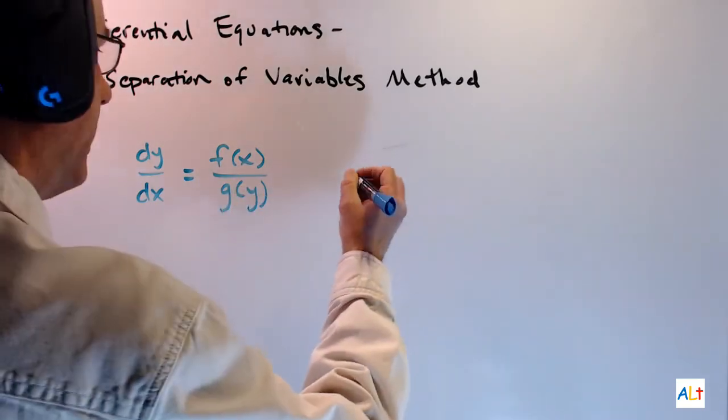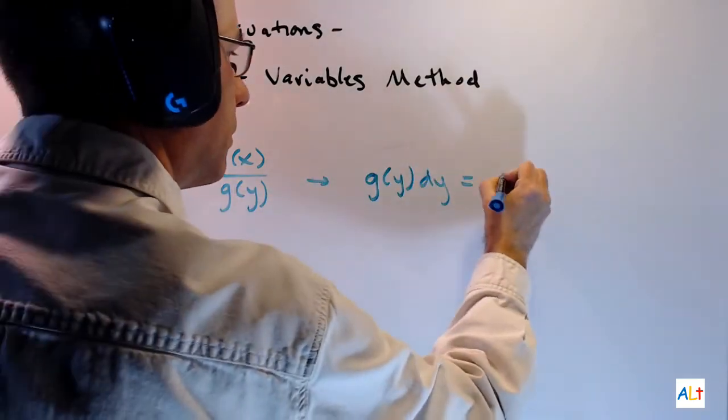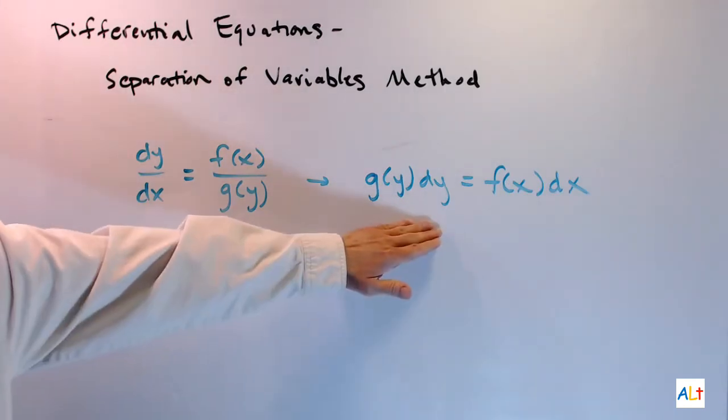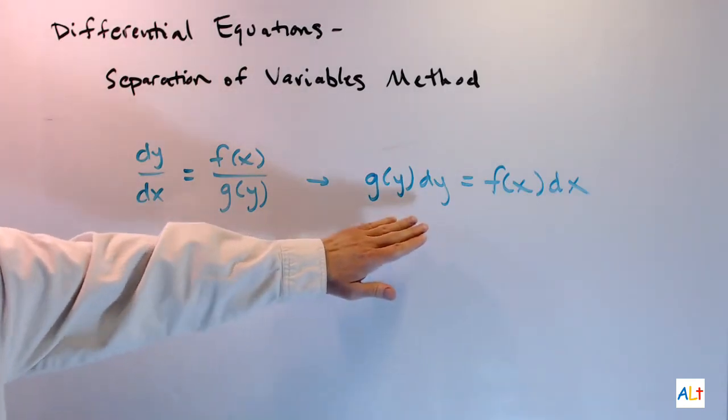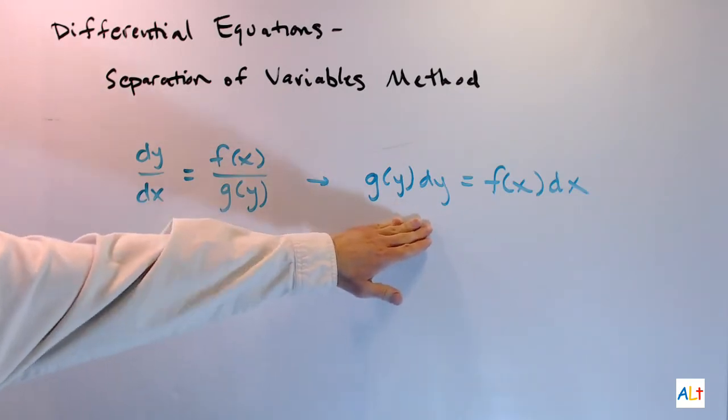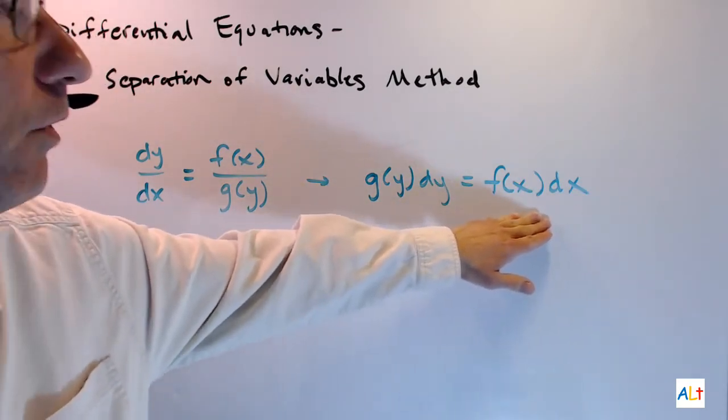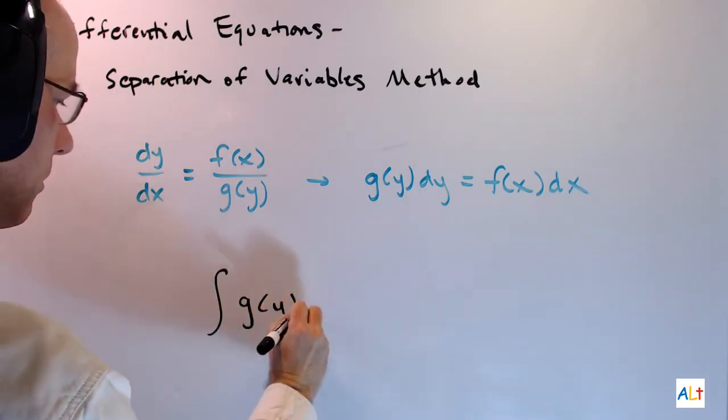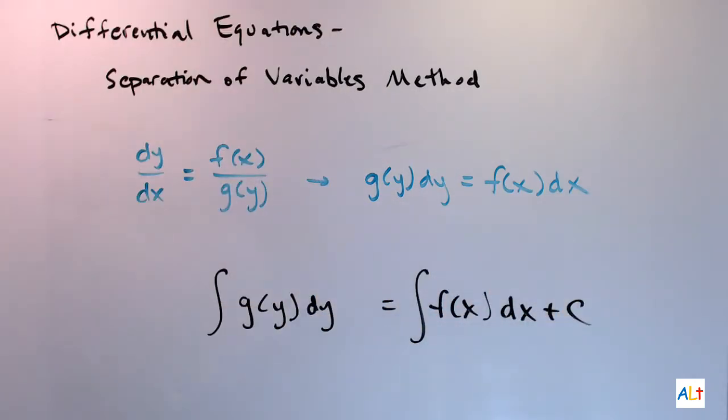If you can do that, then you rewrite this in the following way. And what we have over here is the separation of variables. Every expression involving y is on one side of the equal sign. Every expression involving x is on the other side. You're then able to do this. You simply integrate the left side and the right side and then do some algebra.